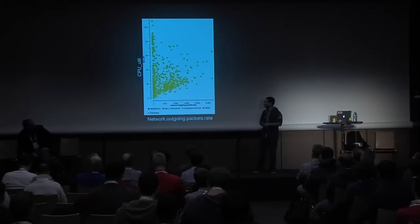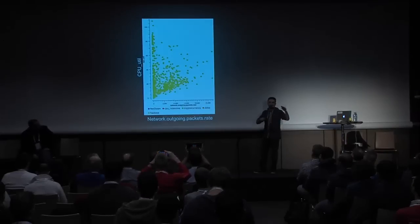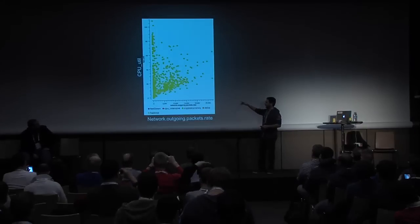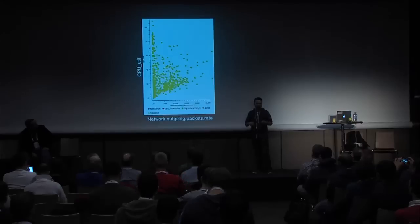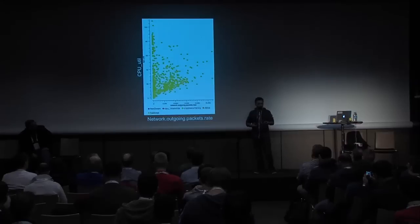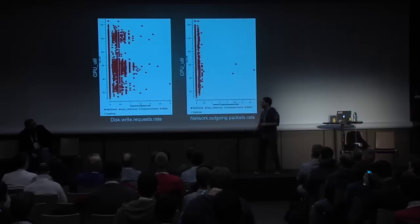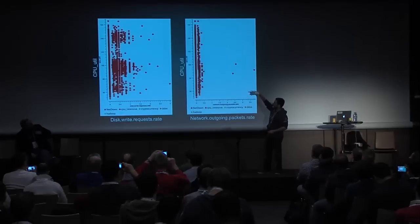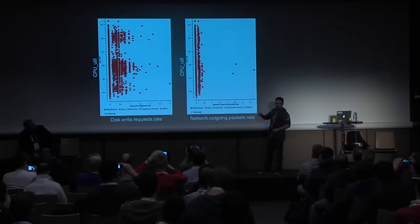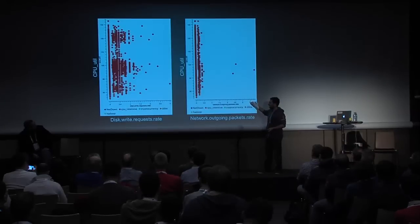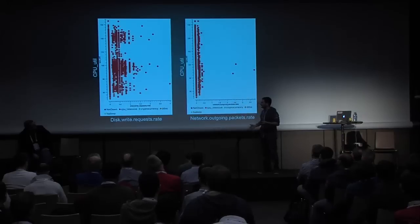So let's see how the data looks. This is the plot for the Hadoop job. HiBench has quite a diverse range of activities. We are plotting the CPU utilization versus the network outgoing package rate. We have quite a lot of points — it's quite sparse, so it can easily be confused with other types of jobs. For the CPU-intensive one, the CPU is extremely used. Since OpenStack is by default configured to over-allocate resources, we are using more than 100%, and we are not using too much network or disk.